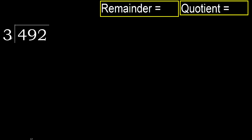492 divided by 3. 4 is not less, therefore with 4, 3 — multiply by which number is nearest to 4 but not greater. 3 multiply by 2 is 6, 6 is greater. Multiply by 1 — 3 is not greater. Ok, subtract.